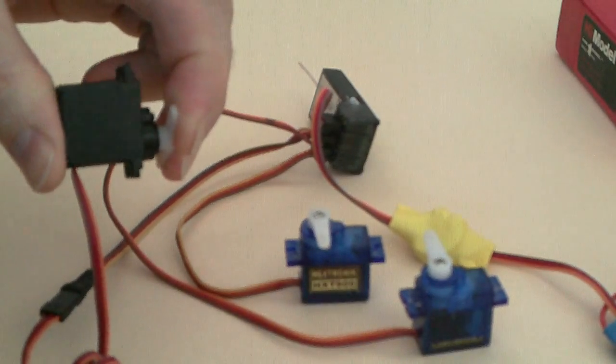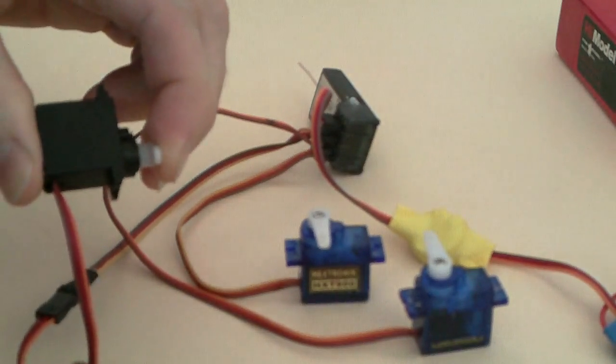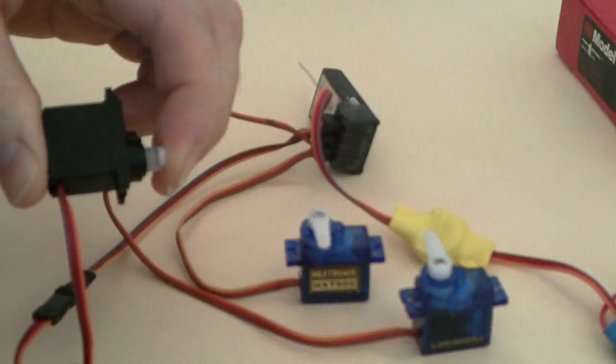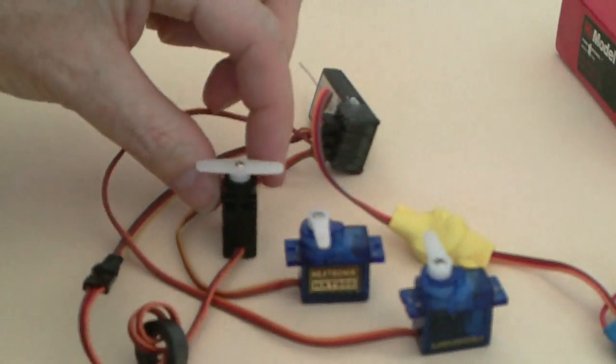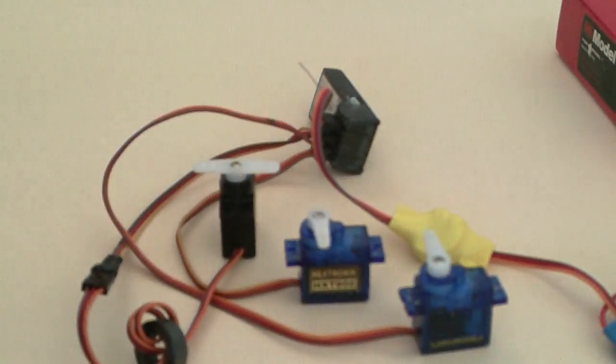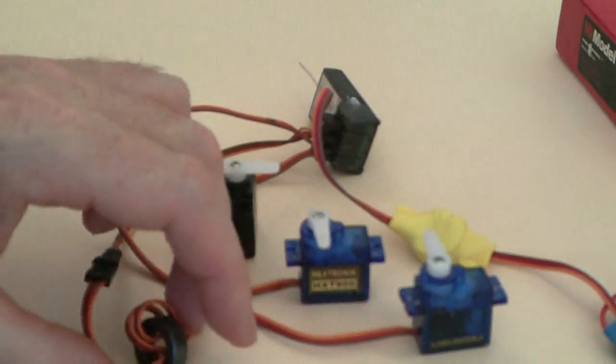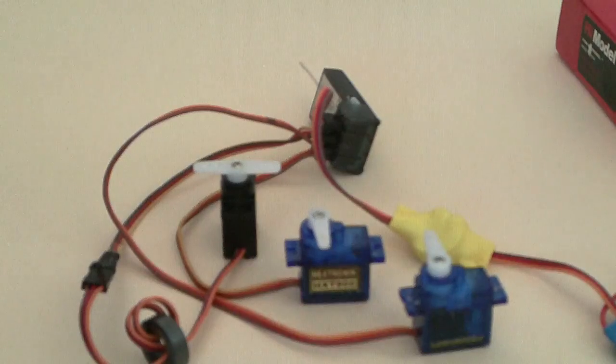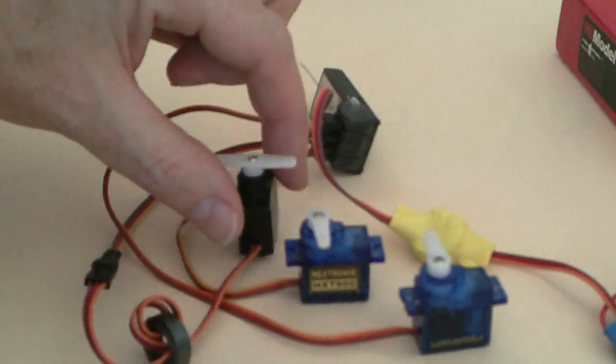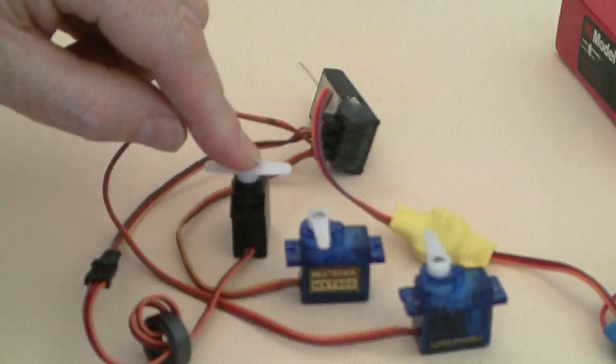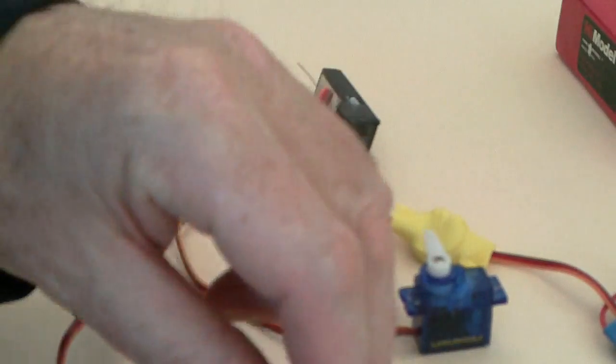And every time it updates, it puts a current pulse on the power supply. So there you go, a simple little toroidal core, probably weighs three or four grams, on the servo which generates the noise, and we reduce the amount of noise that appears back into the rest of the system.